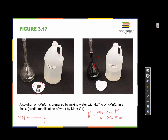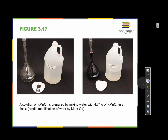This is called a volumetric flask — it has a calibration line near the top. You put the substance in the flask, then add water and fill it right up to the line. That gives you exactly 1,000 mL of solution. If you know exactly how many moles of solute you have and exactly 1,000 mL of solution, you can precisely calculate the molarity.